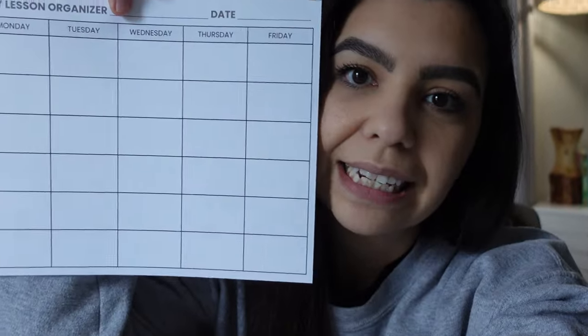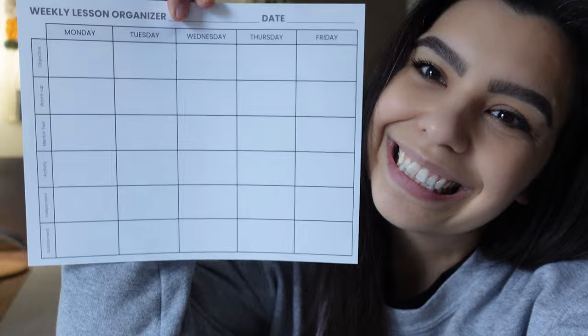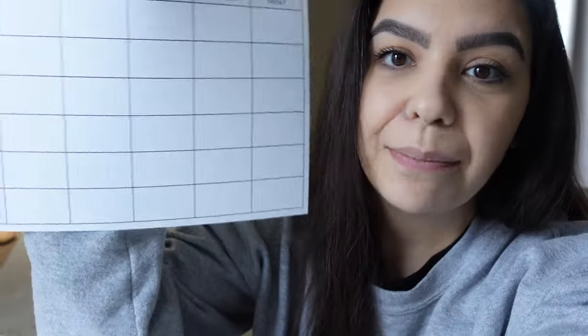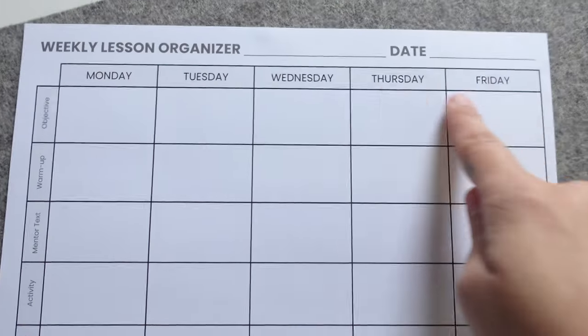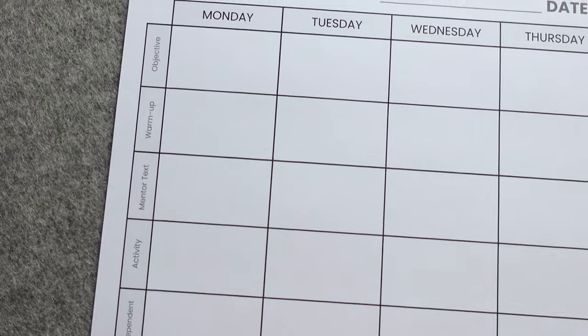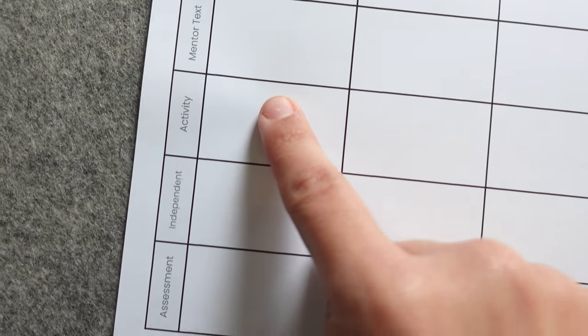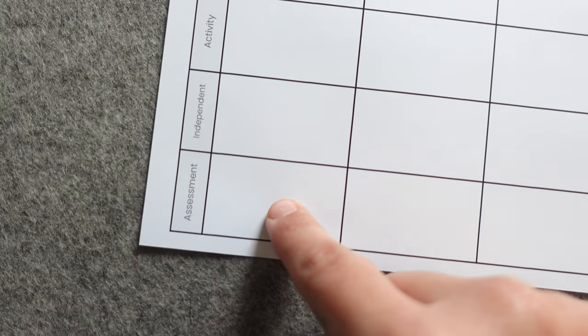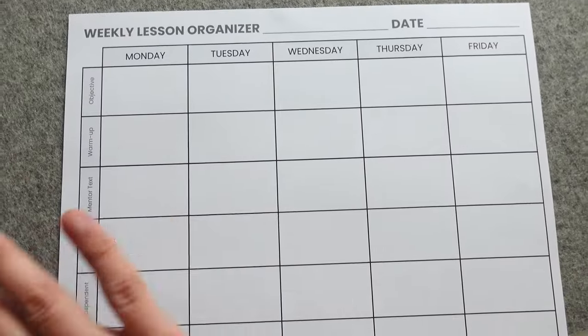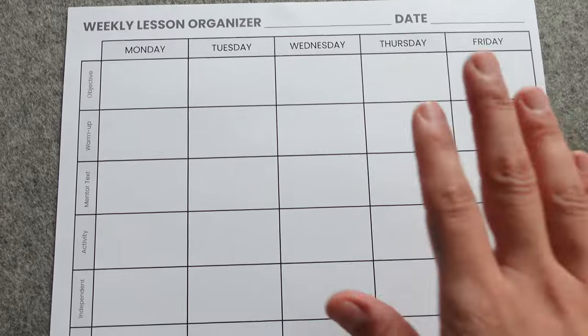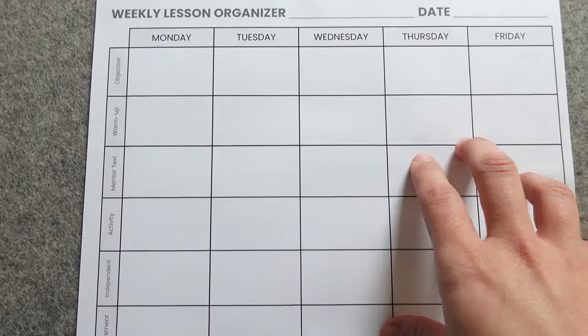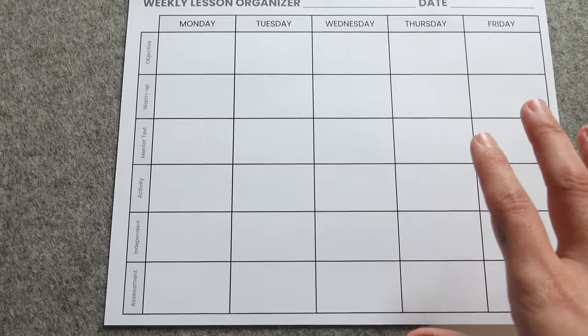What I've done so far is I've created this very basic template. The template has the days of the week at the very top, and along the side it has different areas to focus on: objective, warm-up, mentor text, activity, independence, and assessment. This can be used for any lesson format — reading or writing — it still follows this same exact process.